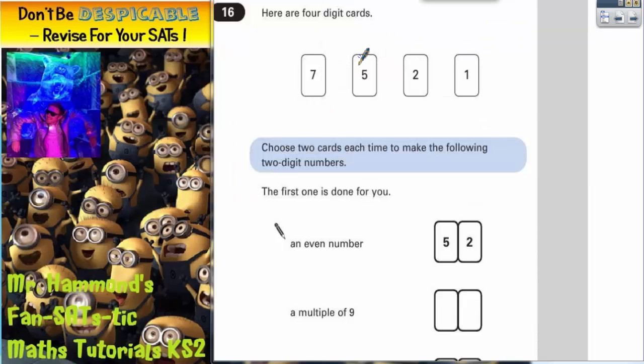Question 16. Here are 4 digit cards: a 7, 5, 2 and a 1. We've got to choose 2 cards each time to make the following 2 digit numbers. The first one is done for you. And the example that they've given us is that for an even number we can put the 5 and 2 together to make 52.